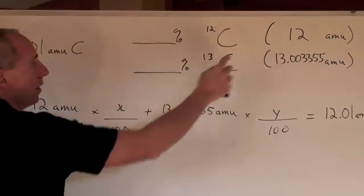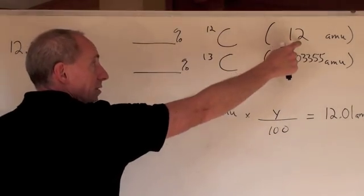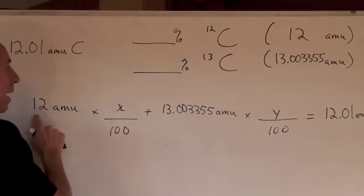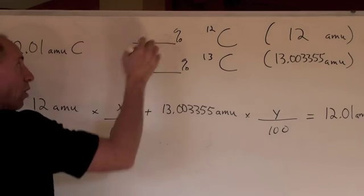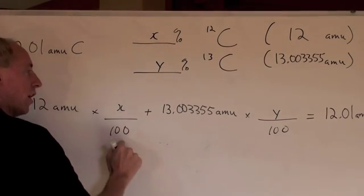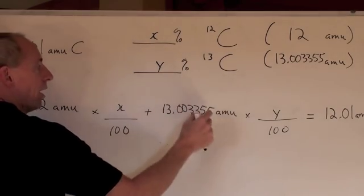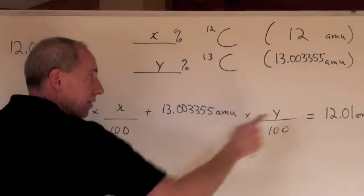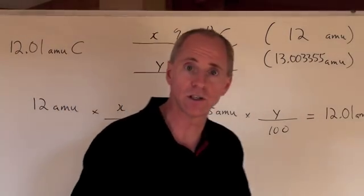If you take the AMUs for carbon, which is exactly 12 for carbon-12, that's the number for its AMUs, and multiply by its percent, which we don't know, we're going to say that's x and that's y, that percent over a hundred plus this percent over a hundred times the AMUs, we're going to get that 12.01 which is given to you in the question.